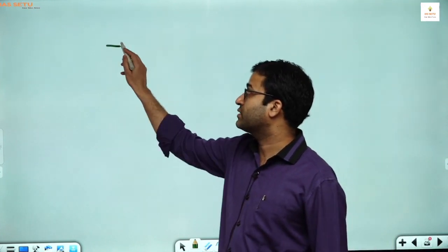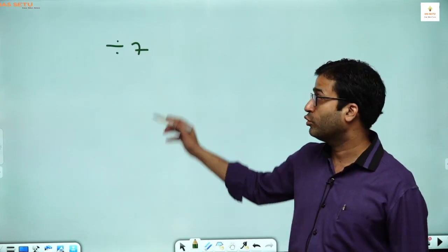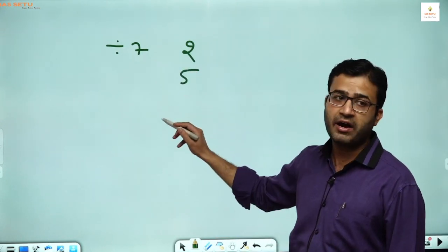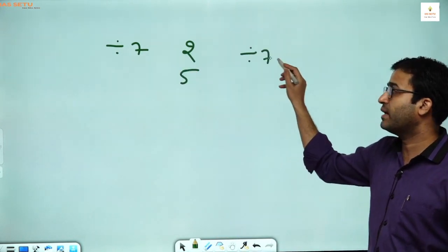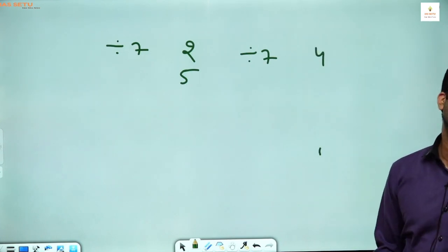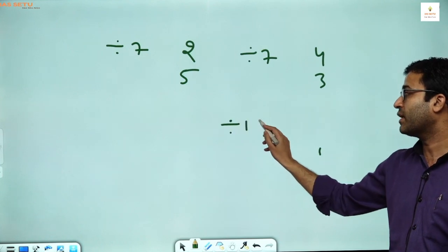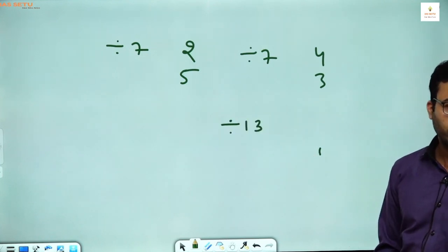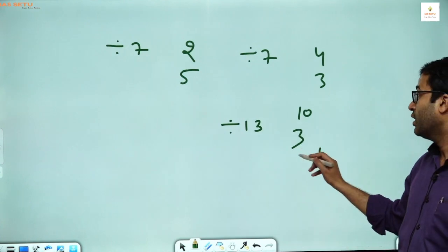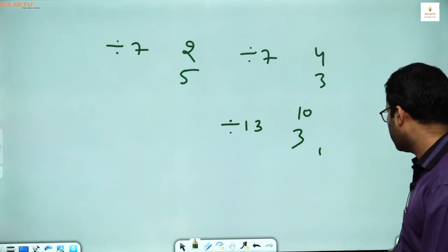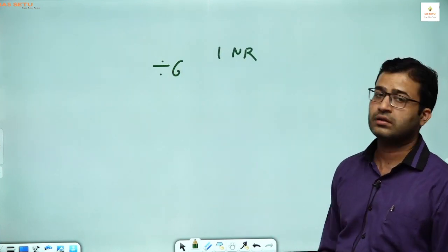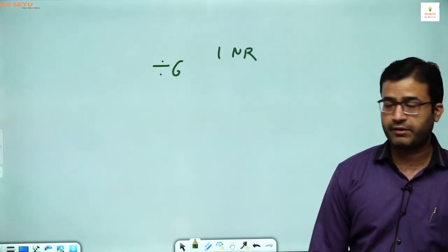If you divide a number by 7 and the positive remainder is 4, the negative remainder is 3. If you divide by 13 and the positive remainder is 10, the negative remainder is 3. If you divide a number by 6 and the negative remainder is 1, the positive remainder is 5. Like 75 divided by 7: the nearest multiple of 7 is 70, so 5 is the positive remainder and the negative remainder is 2.